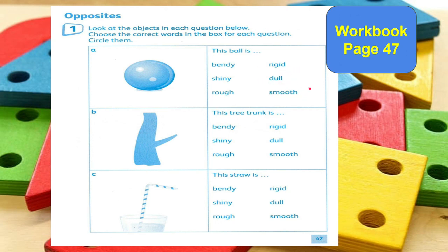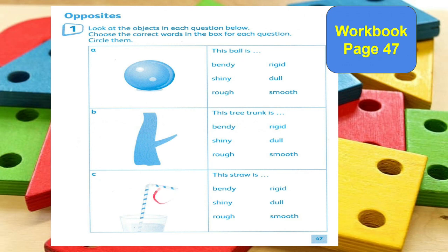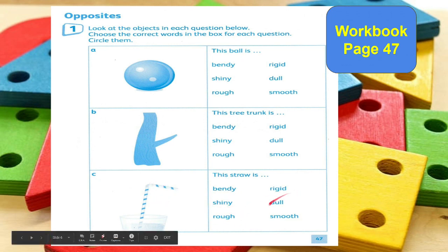Letter B, this tree trunk is — bendy, shiny, rough, rigid, dull, smooth. How would you describe the tree trunk? And letter C, what about the straw? This straw is — bendy, shiny, rough, rigid, dull, smooth.